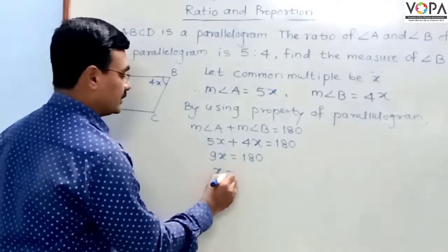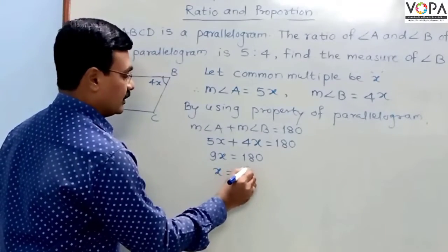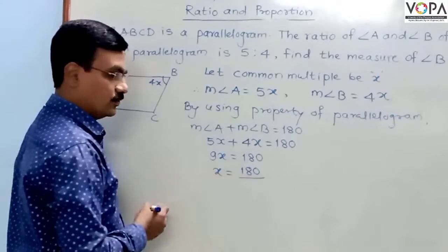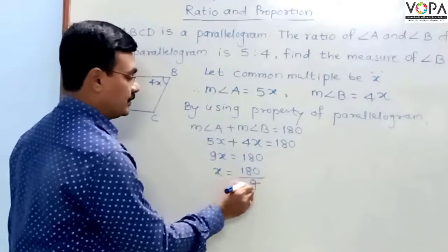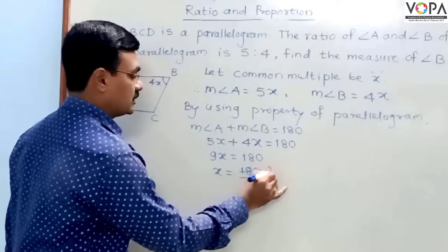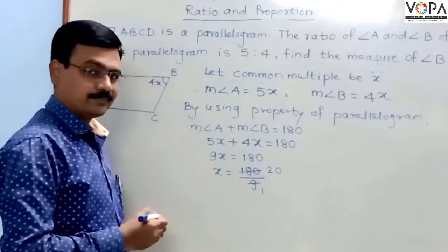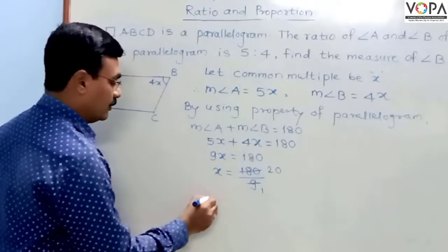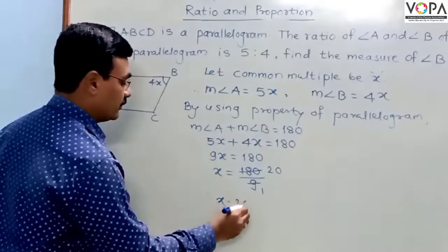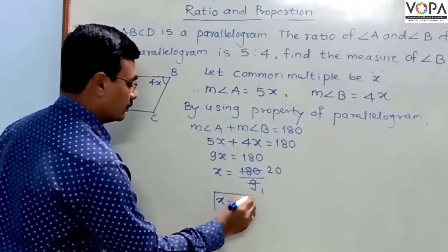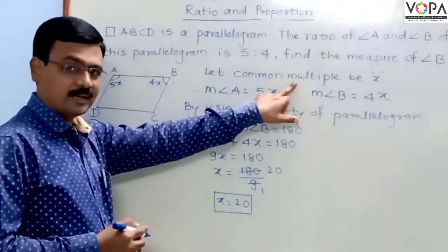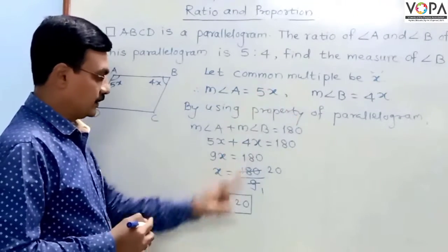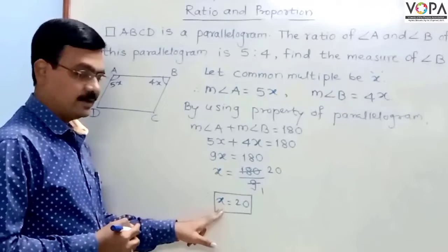To find the value of x, we can write it as 180 divided by 9. Simplification gives us the value 20. Therefore, the value of x is 20. We got the value of that common multiple. x is 20, which is the common multiple.